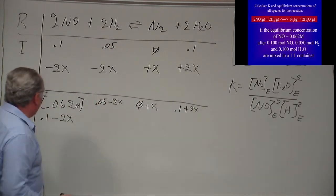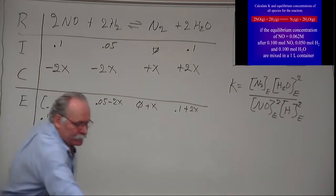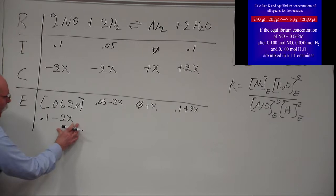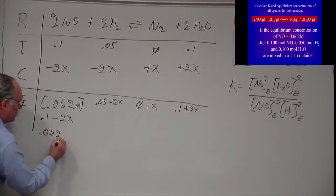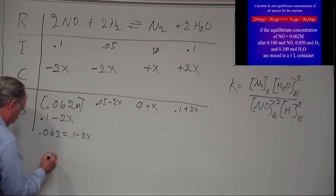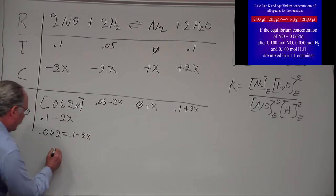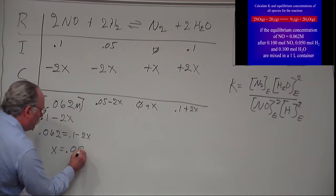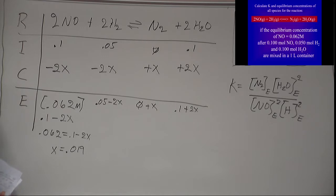Now I have over here 0.062 minus X, so this is my, I know this value, so I can say 0.062 equals 0.1 minus 2X, and I solve this and I get X equals 0.019.